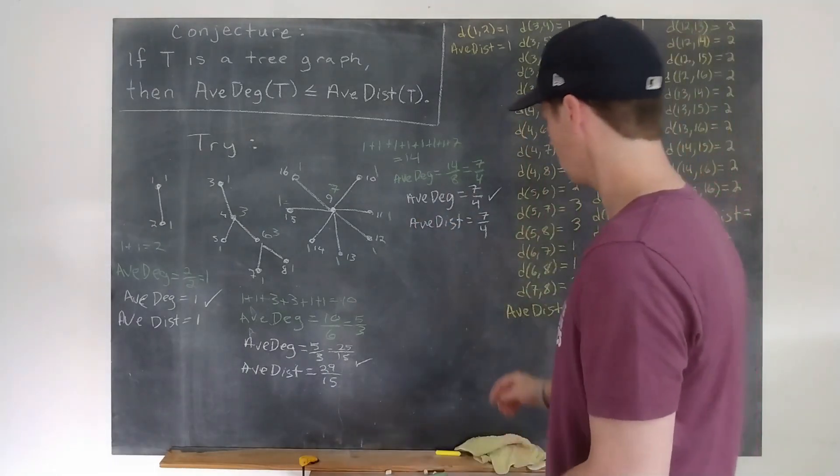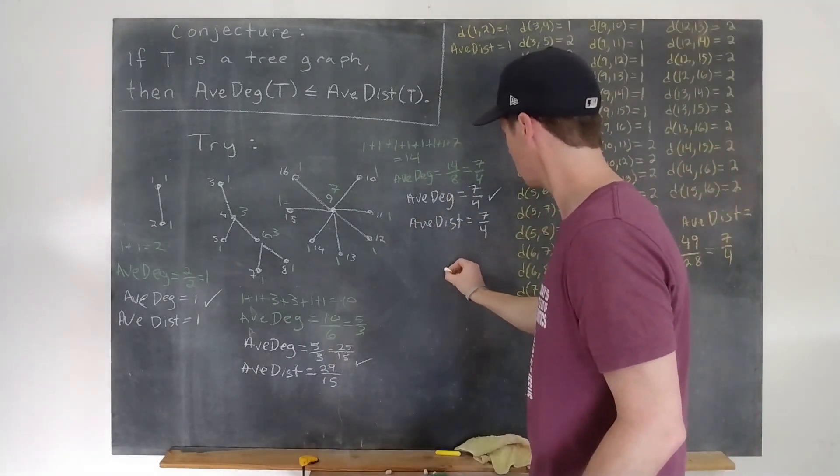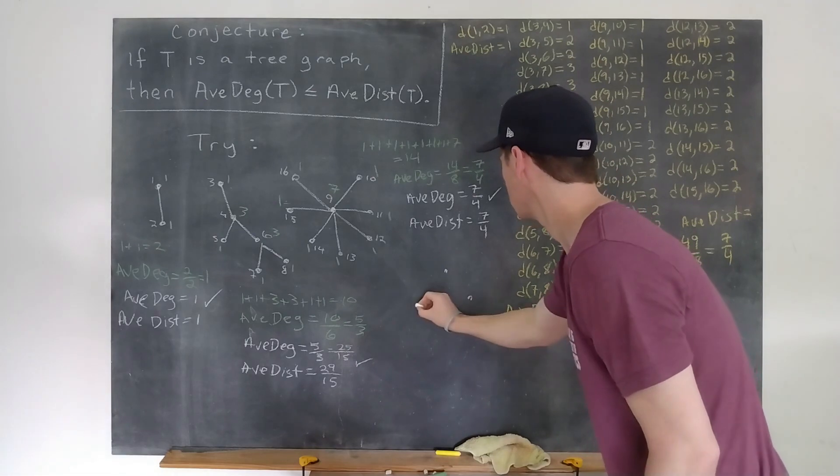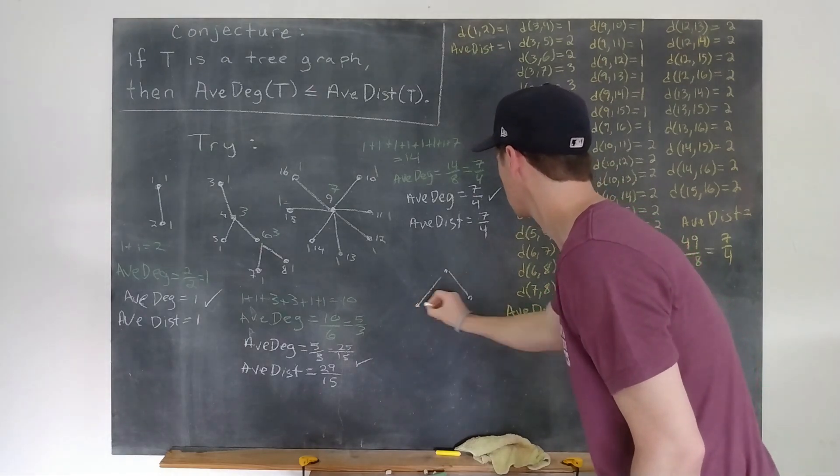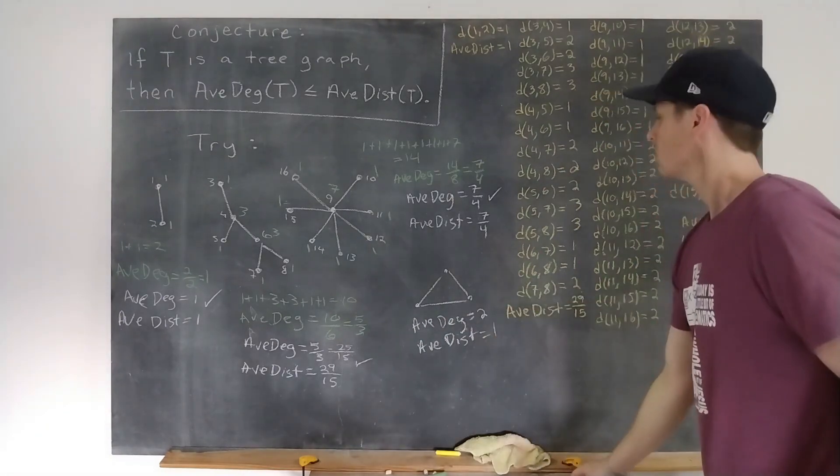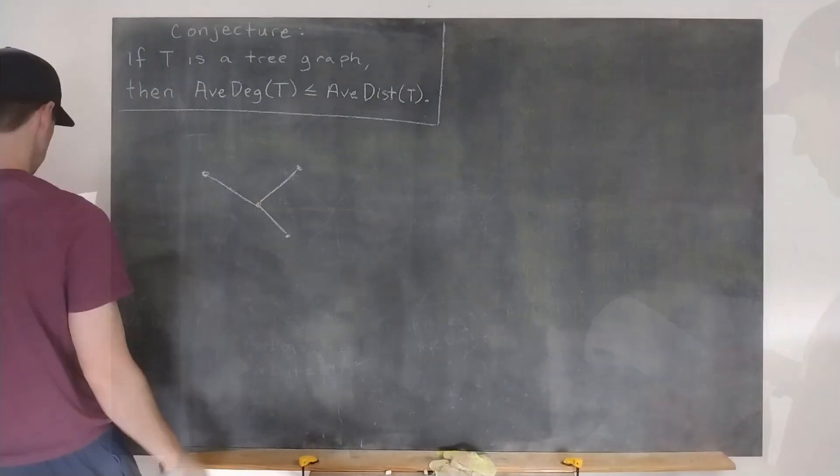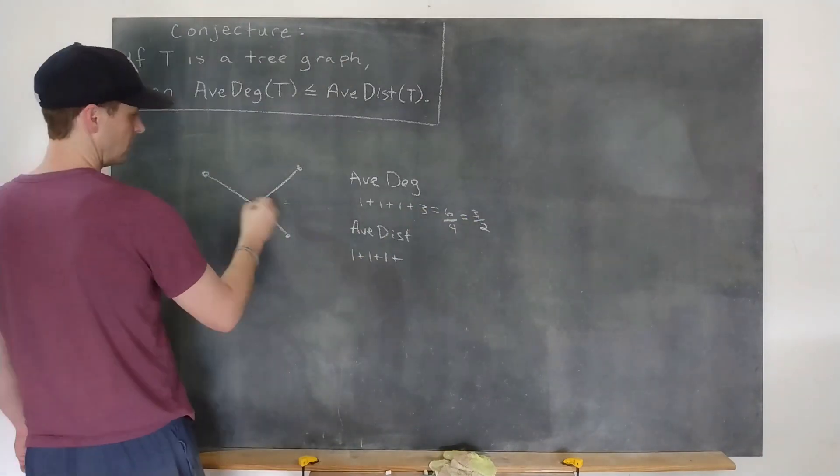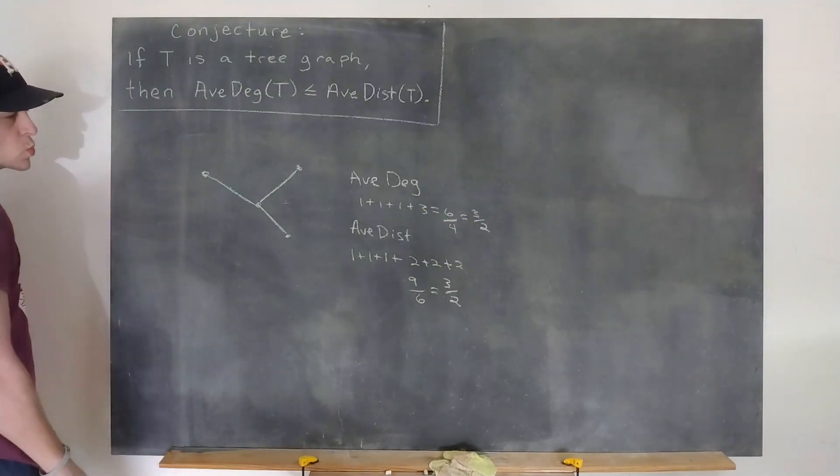This also gives a hint as to the direction we'll want to go to prove the result. But first, for fun, let's try a graph that's not a tree. Interesting. Okay, so here's what I notice. Something seems special about the star graphs. Yep.